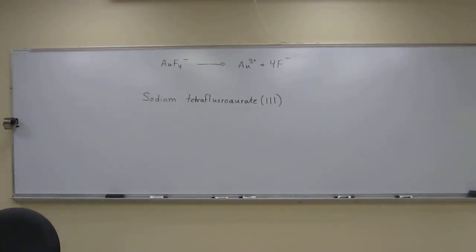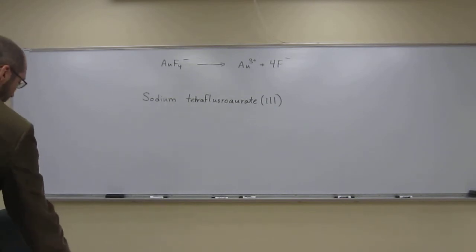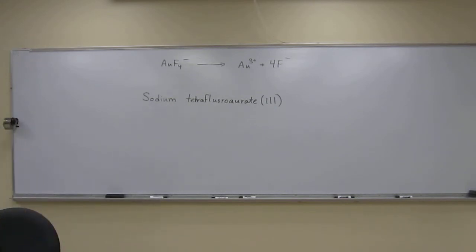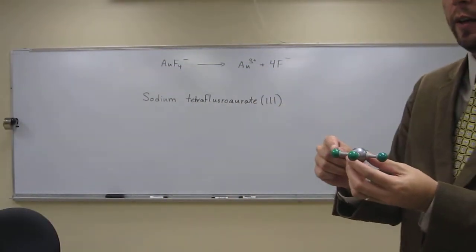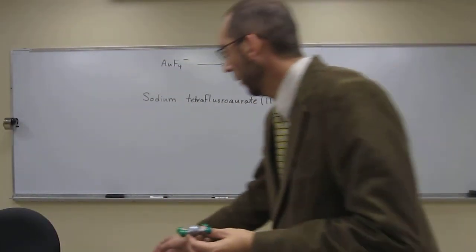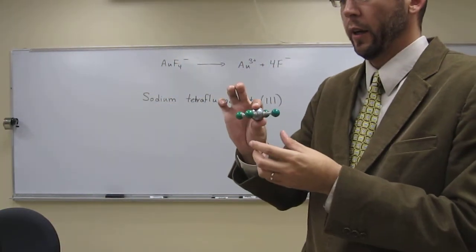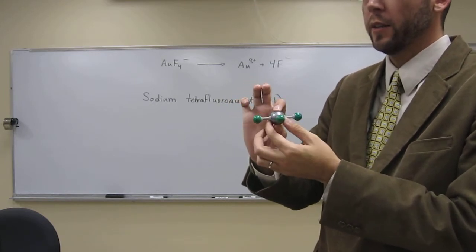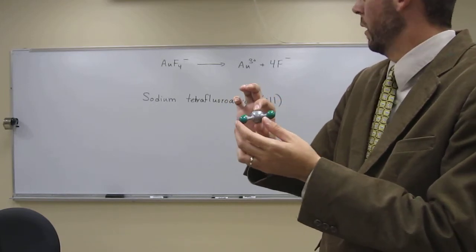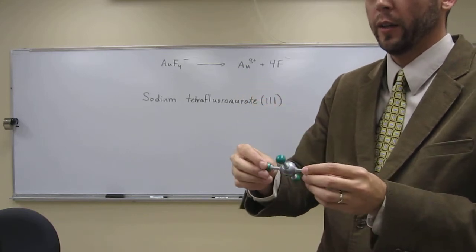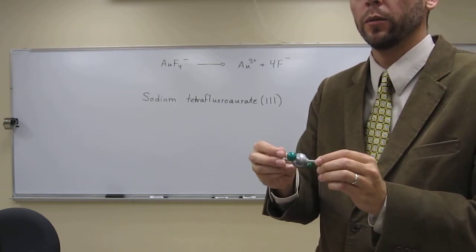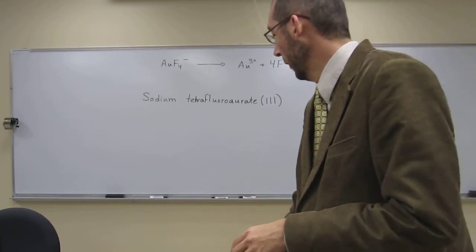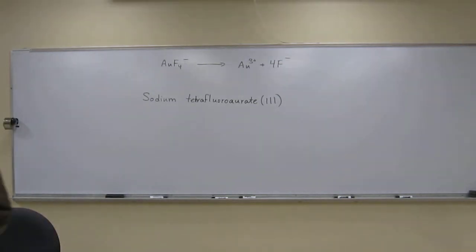Any questions on that one? Oh, and then I have the, I built a compound here. So if you imagine the fluorines to be the green atoms there. The gold, here's the sodium, it's just the counter ion, right? The gold to be the silver atom there. You can see that this AuF4 minus complex ion is also square planar, okay? With the 90 degree angles between the bonds. Any questions on this one? Okay.